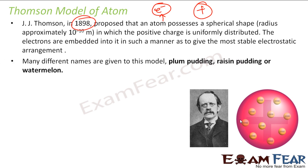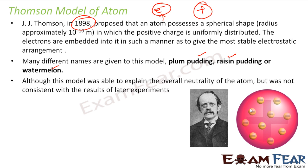So they gave a lot of different names. Some called it plum-pudding, some called it raisin-pudding, some called it watermelon. It looks like a big watermelon, and then some negative charges are embedded into it. This model, the only advantage was it was able to explain the overall neutrality of the atom at that point in time.